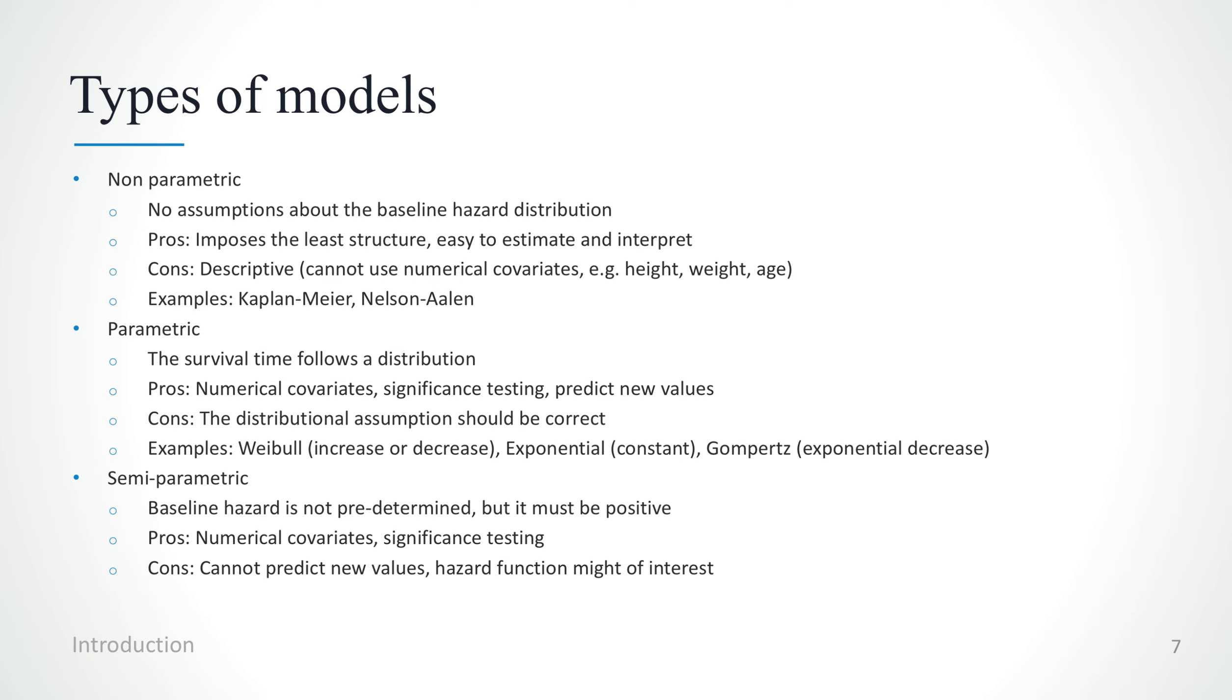Also, we cannot use numerical covariates with these kind of models unless we discretize these covariates. Notable examples are the Kaplan-Meier survival curves.